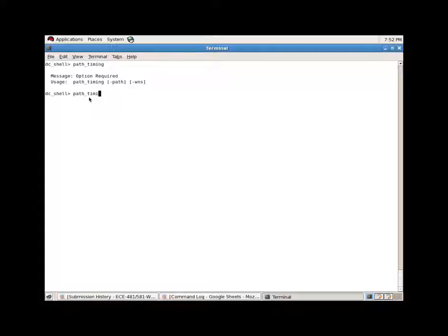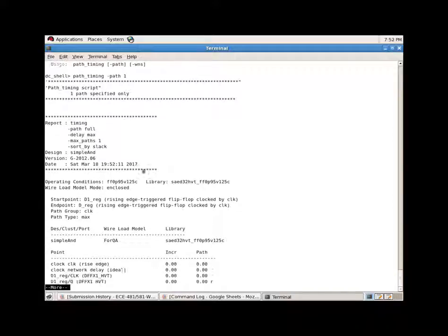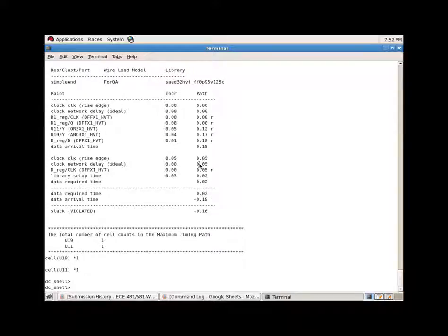By default it shows one path. As you see, first it shows the path timing script from our script and then it lists all the options that I have already described before. In this report you can see all the cells. As I described before, the script also counts the number of combinational cells in the path found. There are two cells, U19 and U11, that are counted here as one.